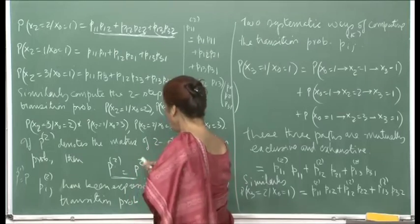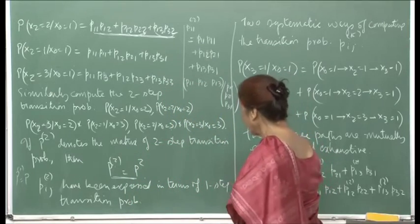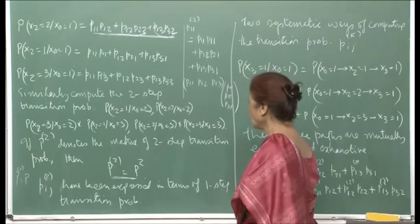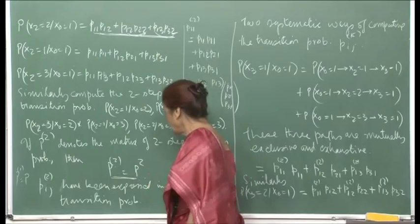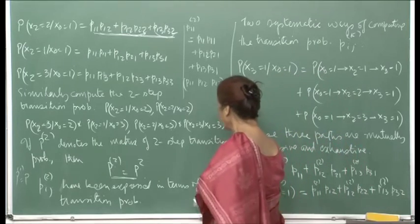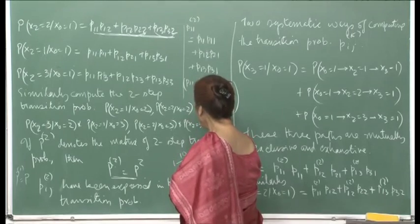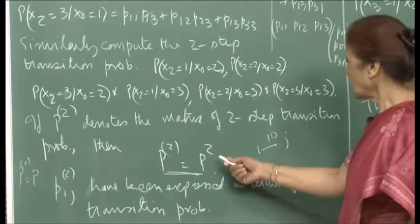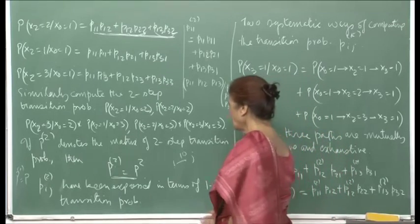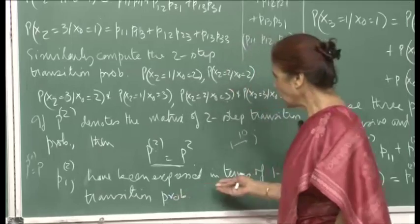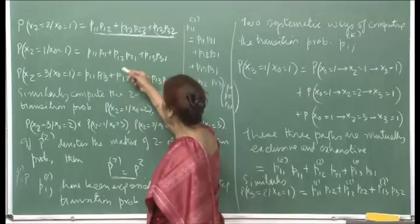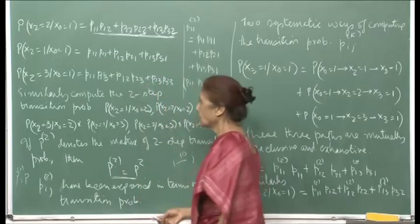If you want to look at n-step transition probabilities, the i,j-th entry of pⁿ will give you the probability. So we will see that the two-step transition probabilities can be expressed in terms of one-step transition probabilities, because we are just multiplying the one-step transition matrix with itself to compute the two-step transition probabilities.